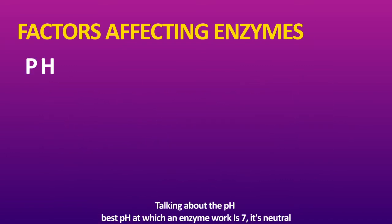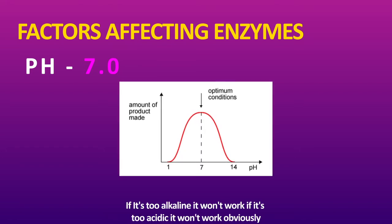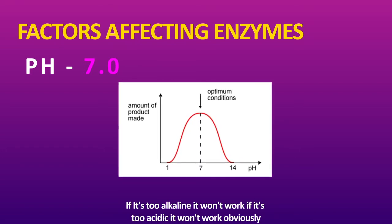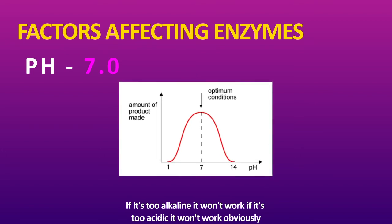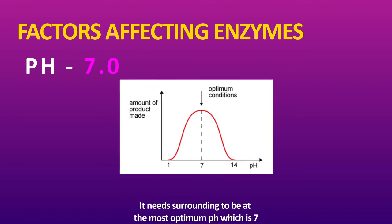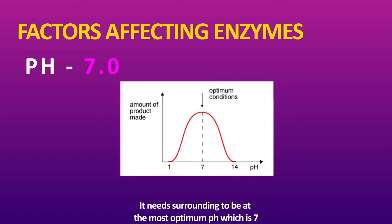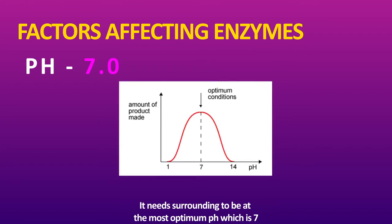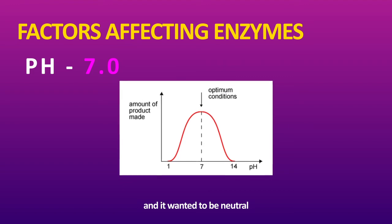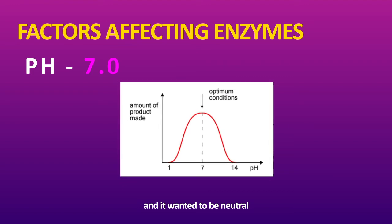Talking about pH — the best pH at which an enzyme works is 7, which is neutral. If it's too alkaline, it won't work. If it's too acidic, it won't work. The enzyme needs its surroundings to be at the most optimum pH, which is 7, and it needs that neutral environment.